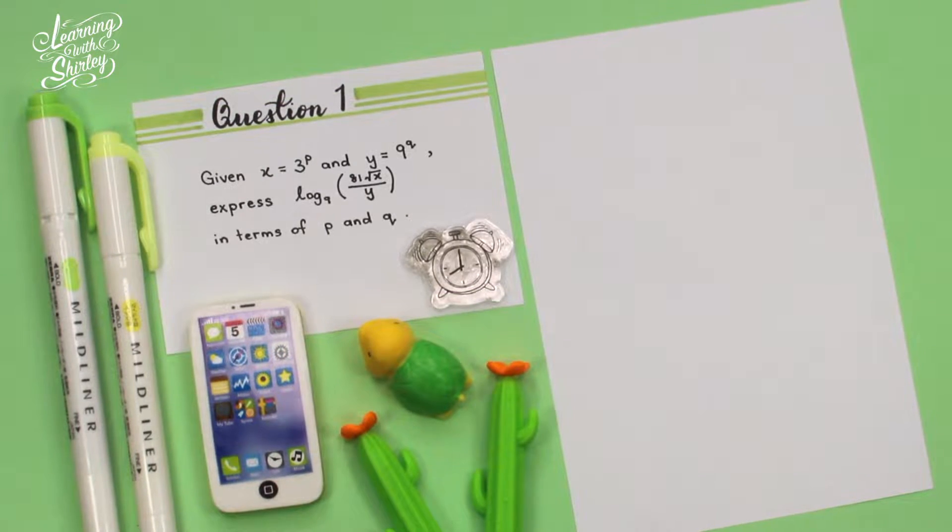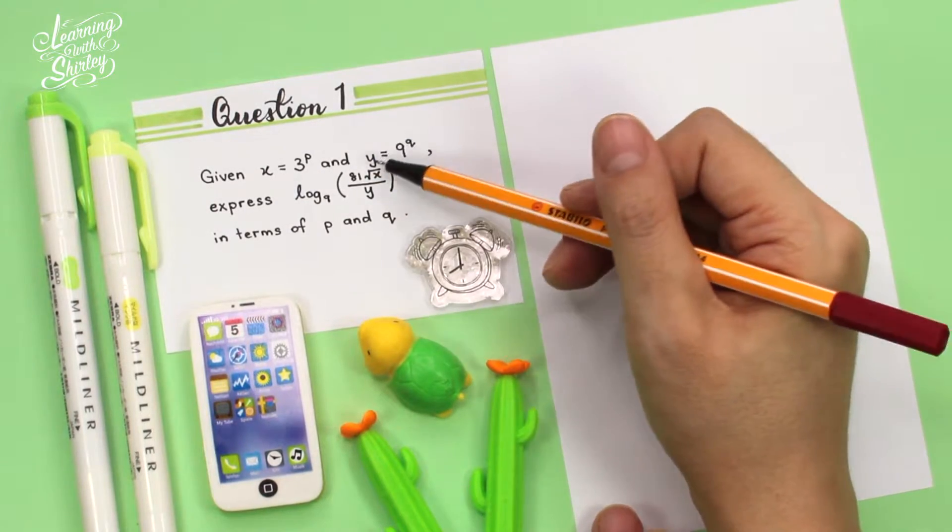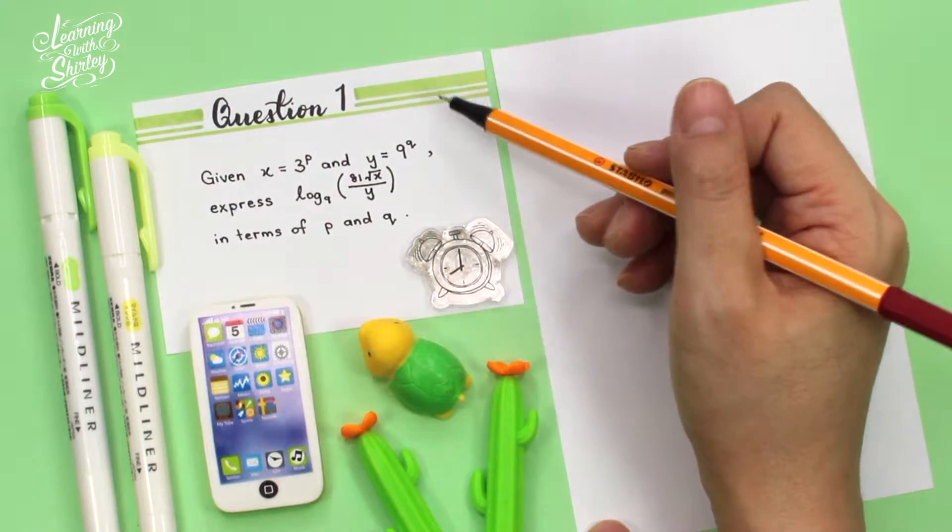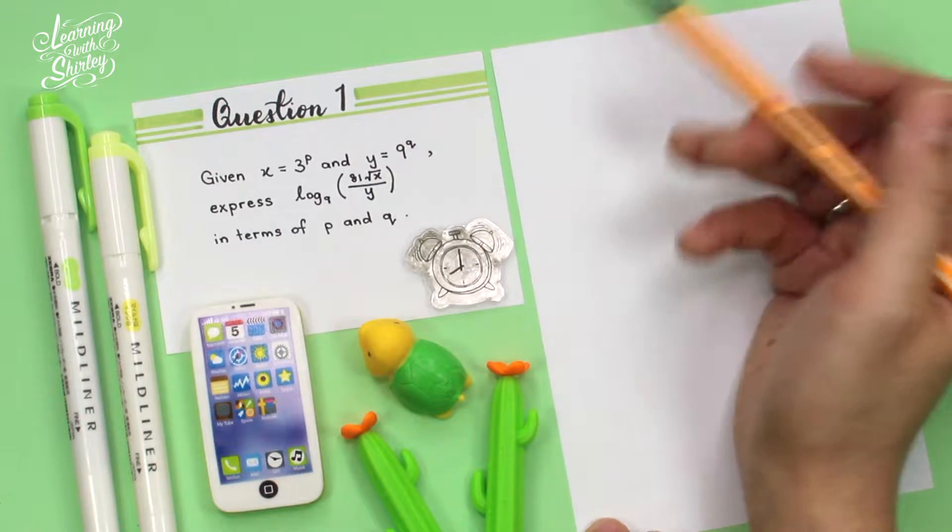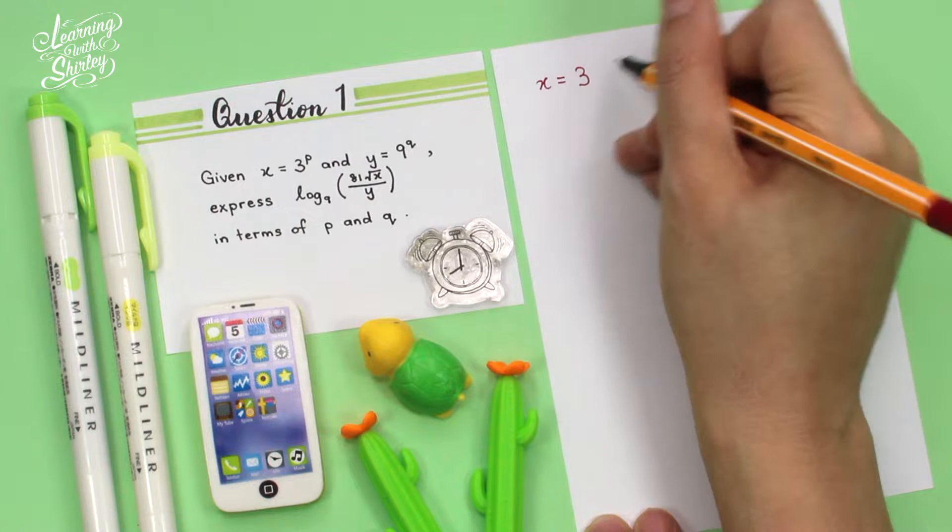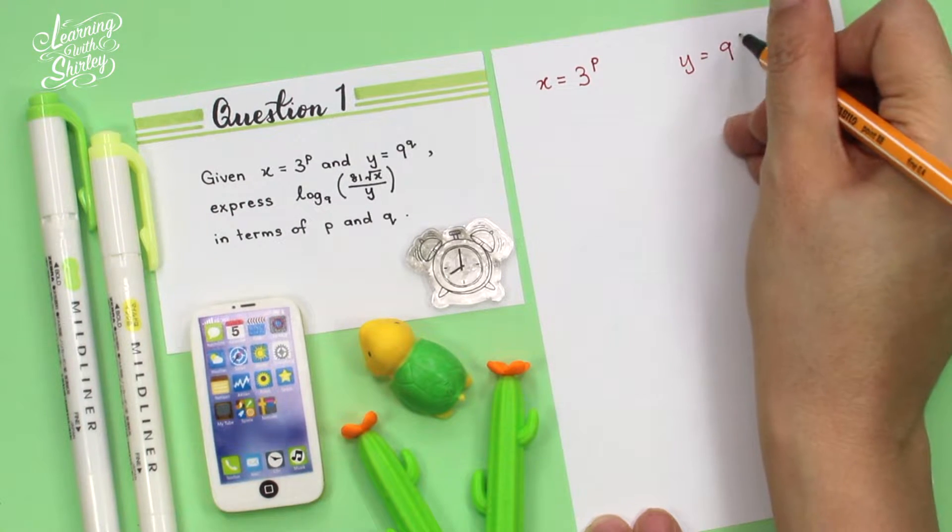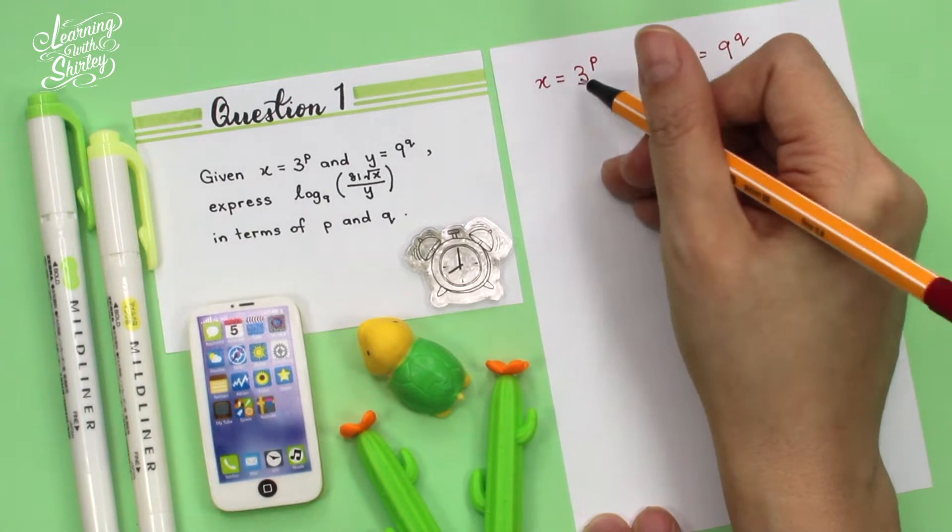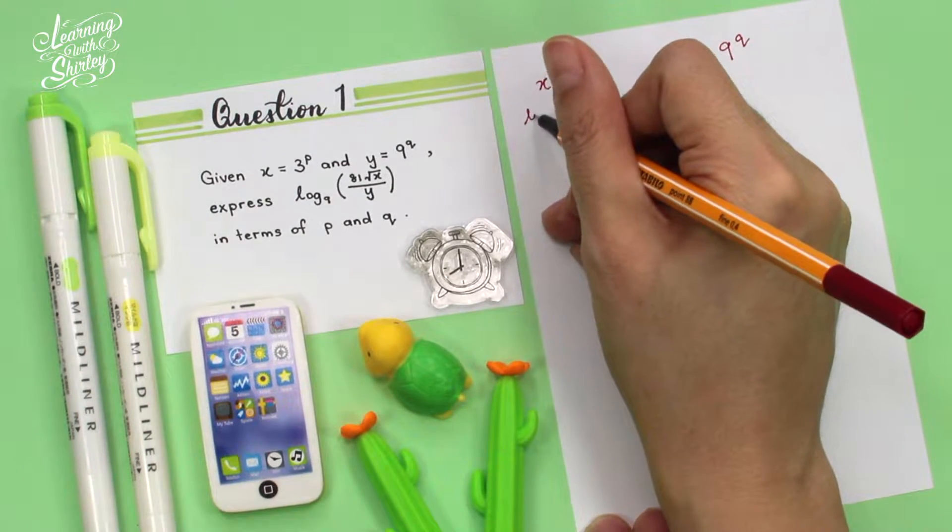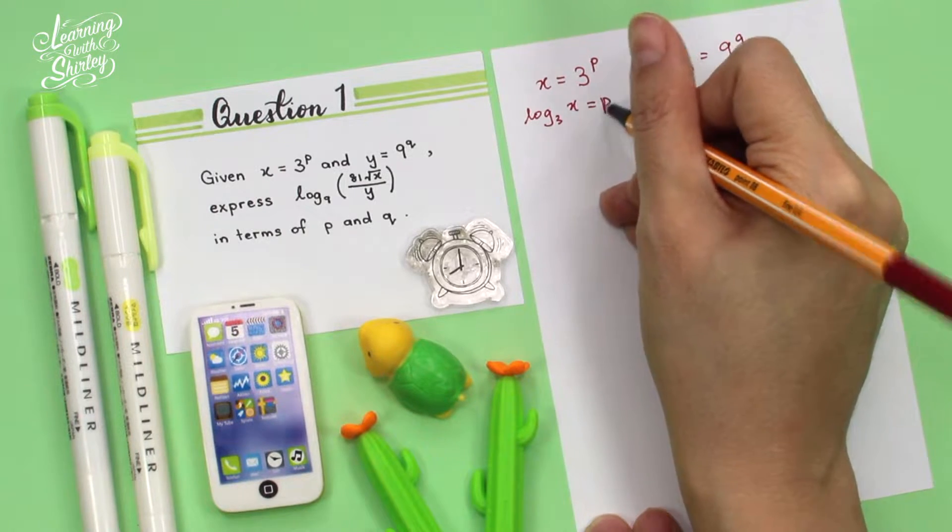So let's look at the question again. Given x equals 3^p and y equals 9^q. This is given in index form, so we have to change it to logarithm form. So when we change this to logarithm form, it becomes log base 3 of x equals p.